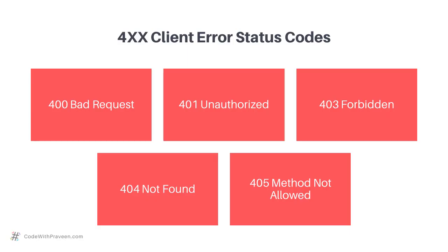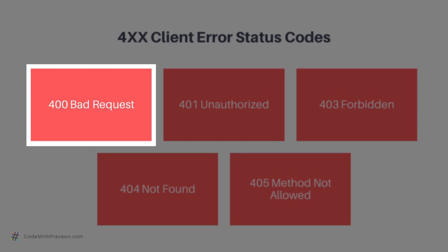The next set of classes is 4xx, which is used to represent the client-side error status codes. Among these, the following are the most important ones to remember when designing and implementing for client-side errors. The 400 Bad Request is the most frequent one in the 4xx series. It conveys that the client has sent a request with details that are not expected on the server side — maybe the parameters are not correct or are in an incorrect format.